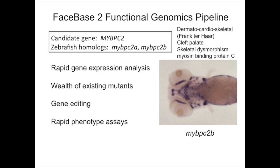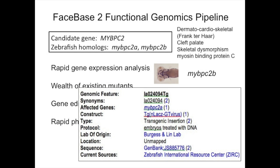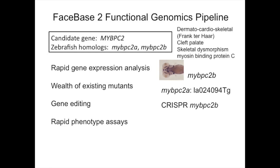In zebrafish, if we look up ZFIN, the expression pattern already exists. In day-four embryos, all staining is in the craniofacial cartilage skeleton and pectoral muscles — which makes sense, as it's expected to be in skeletal muscle. Taking advantage of existing mutants, there is already a retroviral transgene-tagged mutant, which has a very high rate of being useful for subsequent studies.